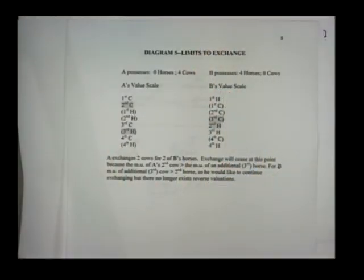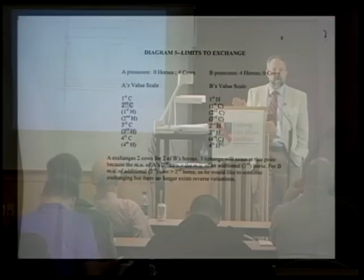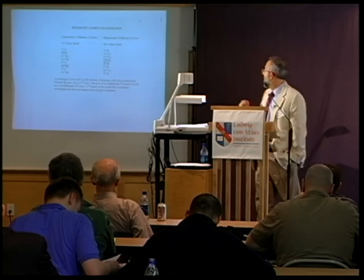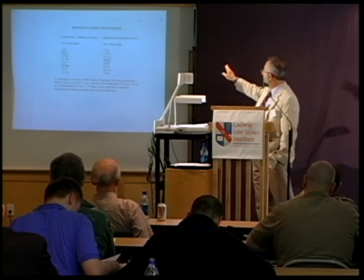The exchange stops when the marginal utility of the good he has to give up — the third cow — is above the marginal utility of the good he would receive. So he's perfectly satisfied with a supply of two horses and two cows.